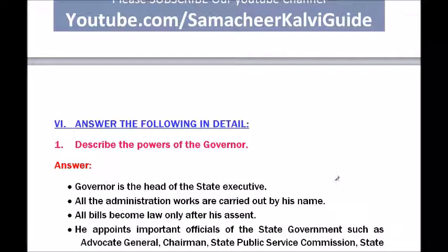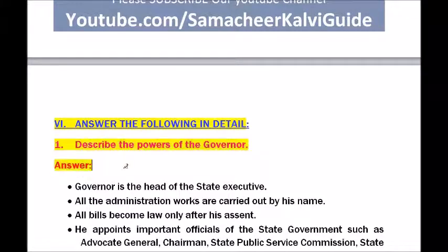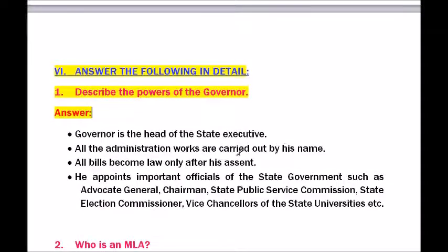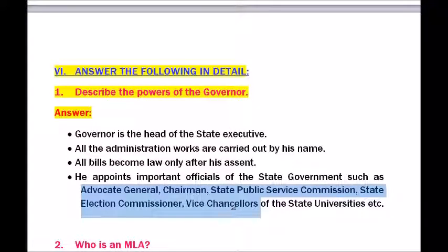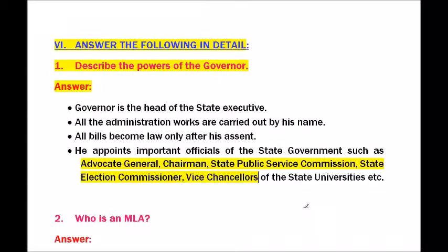Section six: Answer the following in detail. Question one — describe the powers of the governor. The governor is the head of the state executive; all administration works are carried out in his name. All bills become law only after his assent. He appoints important officials such as advocate general, chairman of the State Public Service Commission, State Election Commissioner, and vice chancellors of state universities.